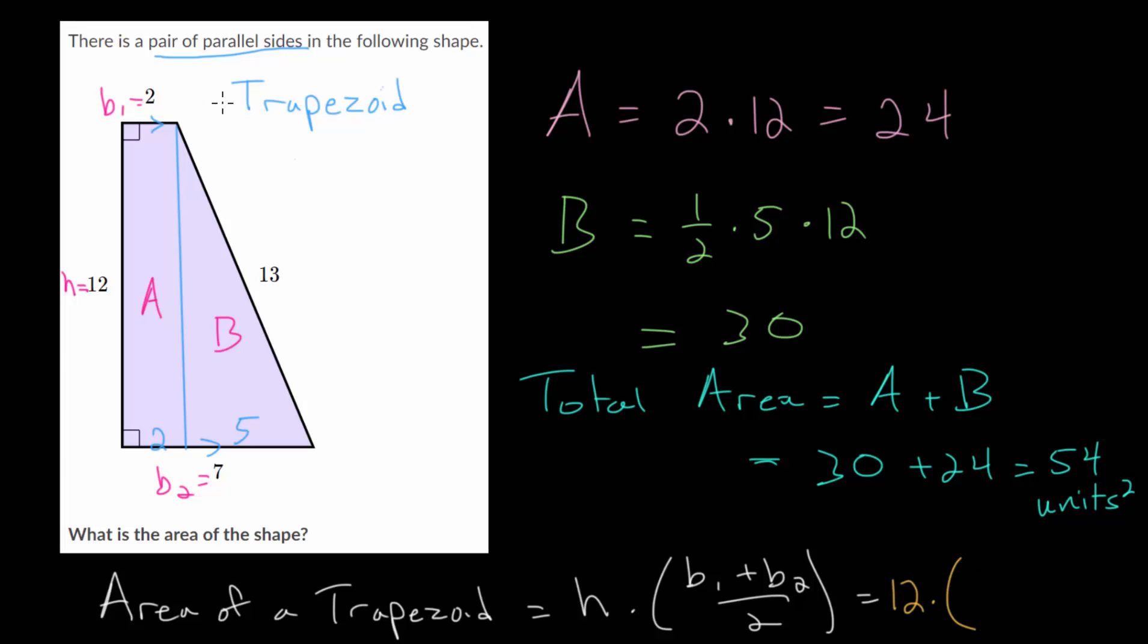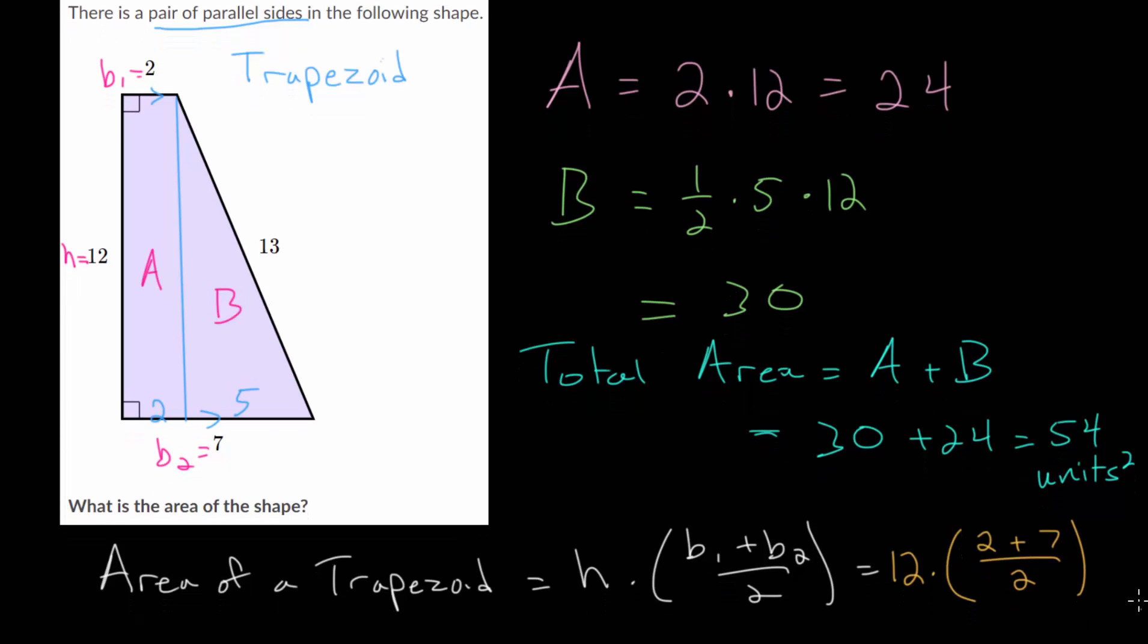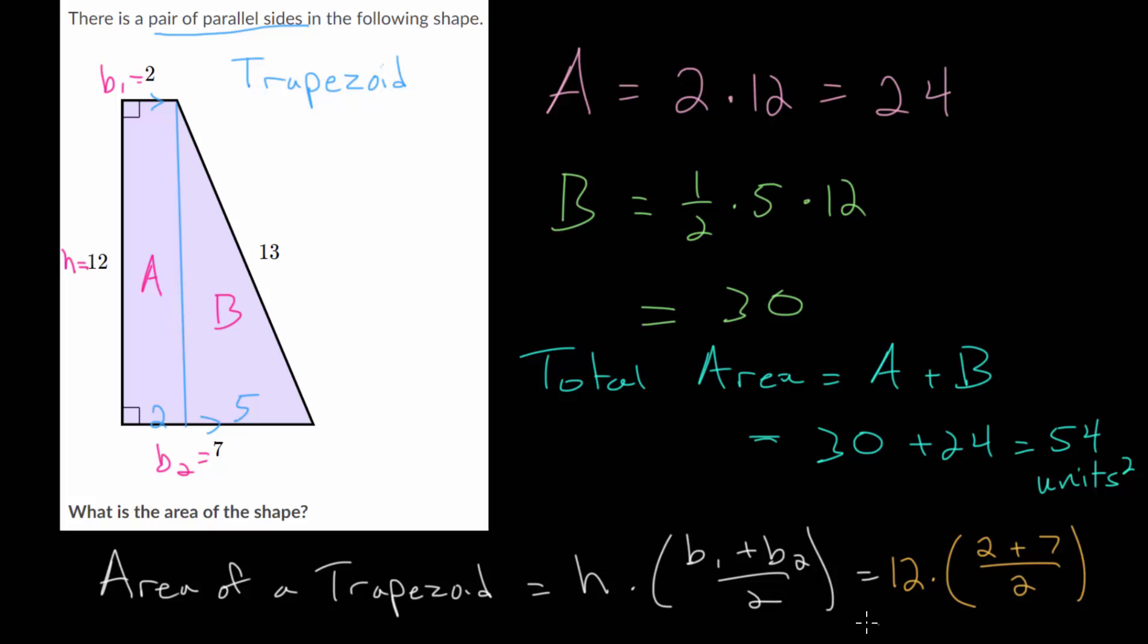We have 12 multiplied by the average of our bases. So we do 2 plus 7 and divide that by 2. And let me just make a little bit more room. So well, 12 divided by 2, that's 6. And this is 9. So you get 6 times 9, which is 54. So you get the exact same answer.